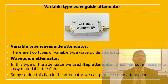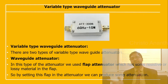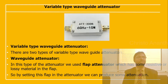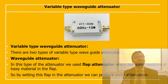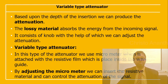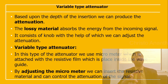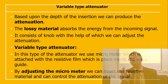The variable type waveguide attenuator can be changed, as the name implies. One form is the flap attenuator — the flap may be resistive or made of a lossy material. By setting this flap and adjusting the depth of insertion, we can produce a variable attenuation. The lossy material absorbs energy from the incoming signal, and a knob allows you to adjust the attenuation in decibels.